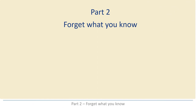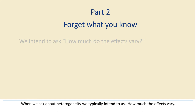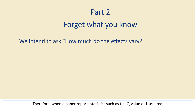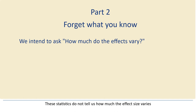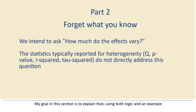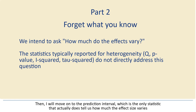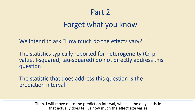Part 2: Forget what you know. When we ask about heterogeneity, we typically intend to ask how much the effects vary. Therefore, when a paper reports statistics such as the Q value or I-squared, we may assume that these statistics address our question. As it turns out, that assumption is incorrect. These statistics do not tell us how much the effect size varies. My goal in this section is to explain that using both logic and an example. And then I'll move on to the prediction interval, which is the only statistic that actually does tell us how much the effect size varies.